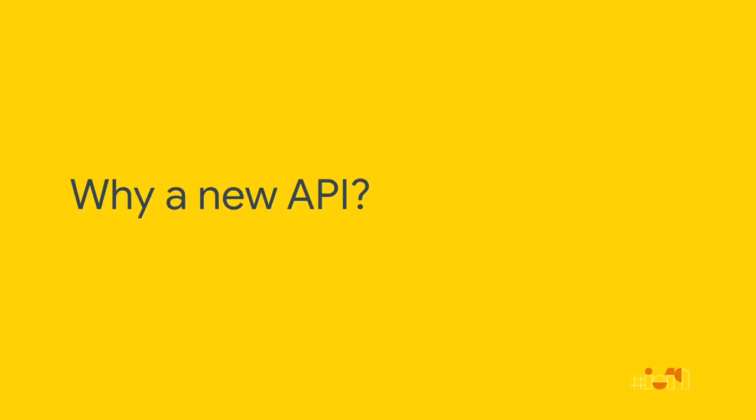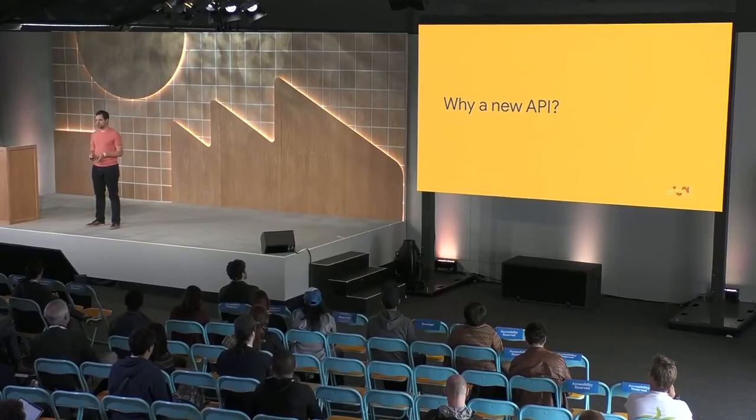You might ask: we already have WebGL, so why make a new API? The high-level reason is that WebGL is based on an understanding of GPUs as they were 12 years ago. GPU hardware has evolved, but also the way we use GPU hardware has evolved. There is a new generation of GPU APIs in native — for example Vulkan — that help do more with GPUs, and WebGPU is built to close the gap with what's possible in native today. It will improve what's possible for game developers, but also visualization, heavy design applications, machine learning practitioners, and much more.